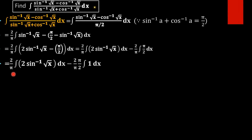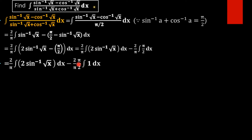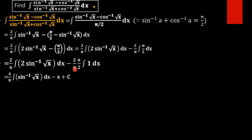So we get 2 over pi times integral of 2 sin inverse of root x dx, minus 2 over pi times pi by 2 times integral of 1 dx. On cancelling, this simplifies; the integral of 1 dx is x. The 2 and 2 combine to give 4 over pi, yielding 4 over pi times the integral of sin inverse of root x dx, minus x plus c.